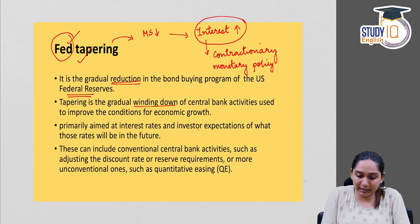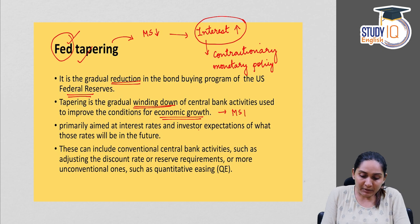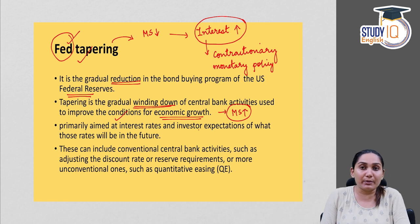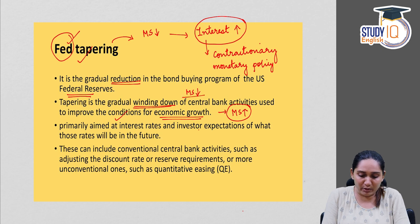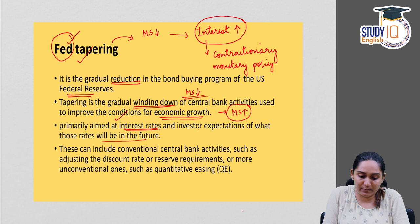Tapering is the gradual winding down of central bank activities used to improve conditions for economic growth. An increase in money supply is the precondition for economic growth, so winding down these activities means interest rates would be gradually increased in order to cut down on money supply. Fed tapering is primarily aimed at interest rates and investor expectations of what those rates will be in the future.